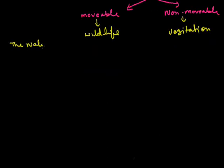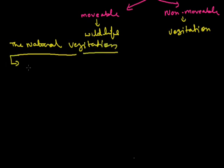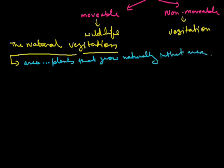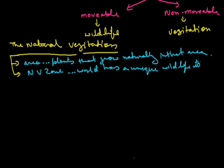Natural vegetation means plants that grow naturally in that area and not due to human activities. Each natural vegetation zone of the world has a unique wildlife to it, and this is called a biome.